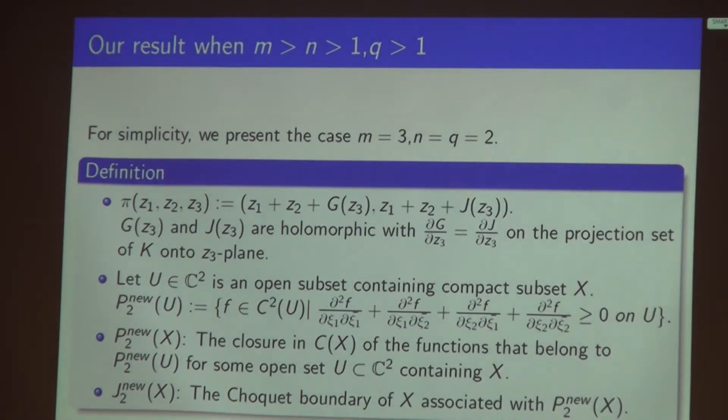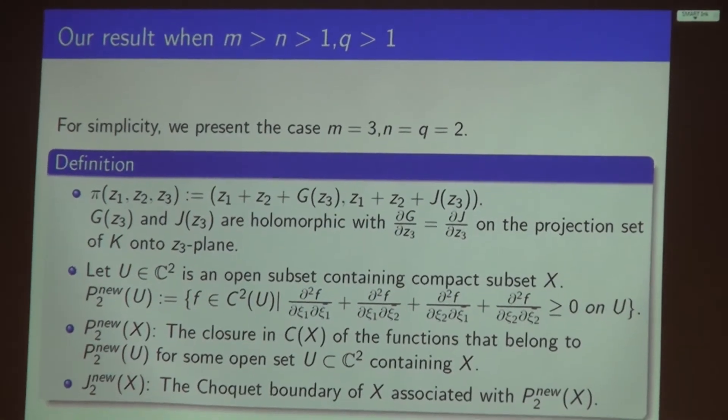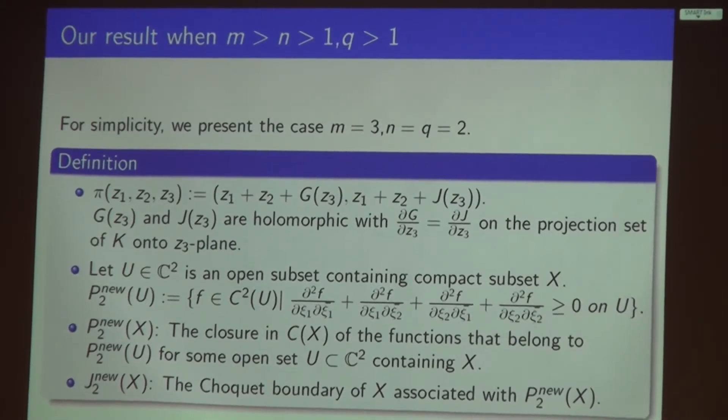If the image set pi(K) has a twisted property P_{Q,nu}, and we still assume that each fiber K intersect pi inverse z has property P_Q, then K has property P_Q in C^m. Let me talk about what this new property P_{Q,nu} is. For simplicity, we have a short time, so I present the case m equals 3 and n equals q equals 2. This is our mapping pi from C³ to C². It's defined to be (z₁ + z₂ + G(z₃), z₁ + z₂ + J(z₃)).